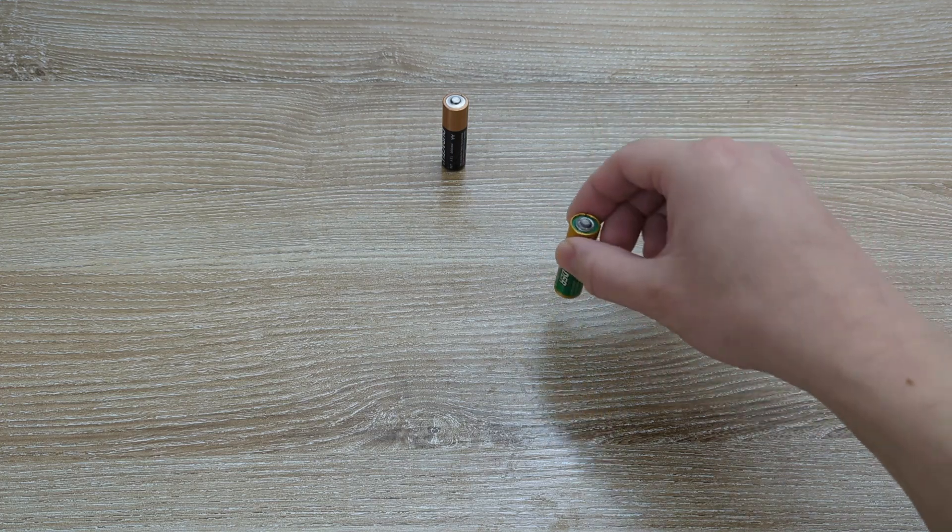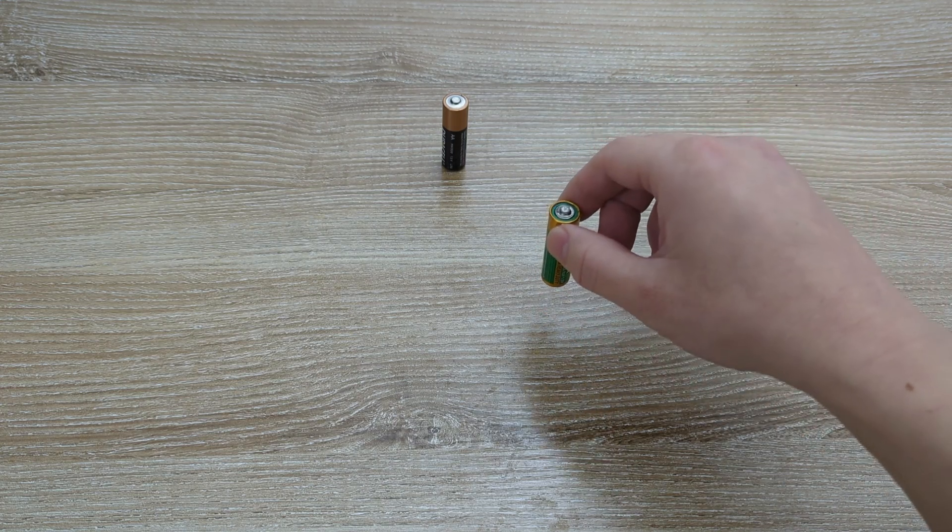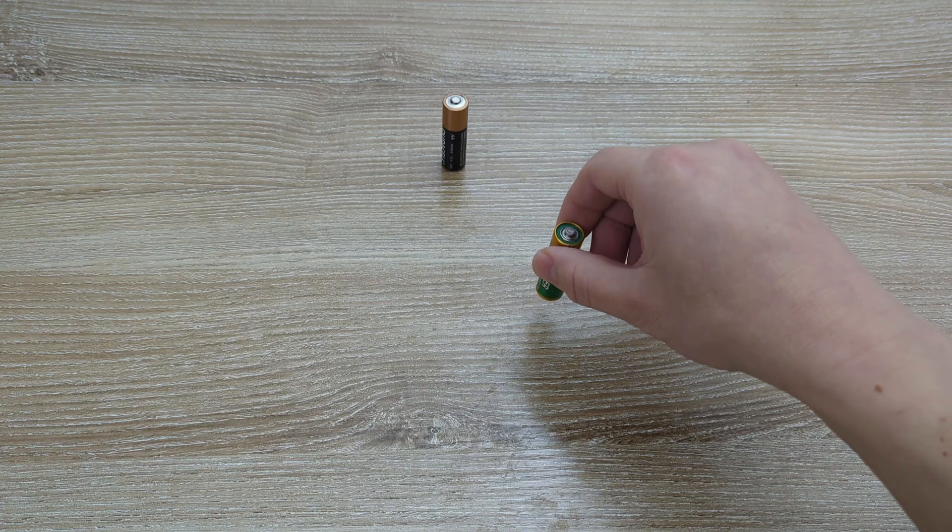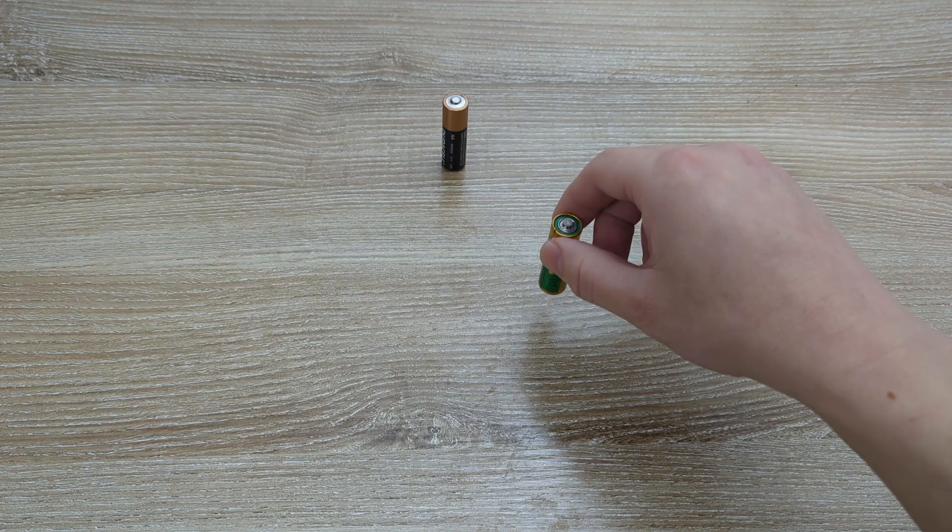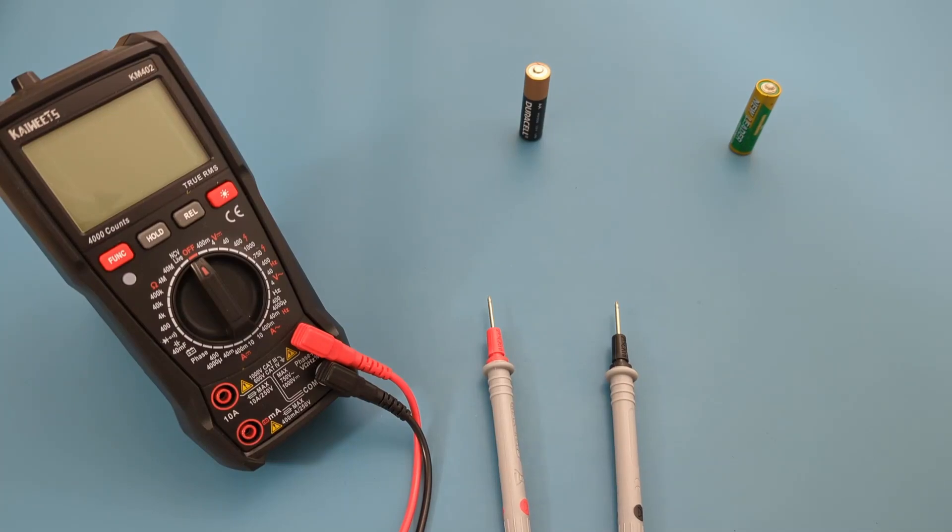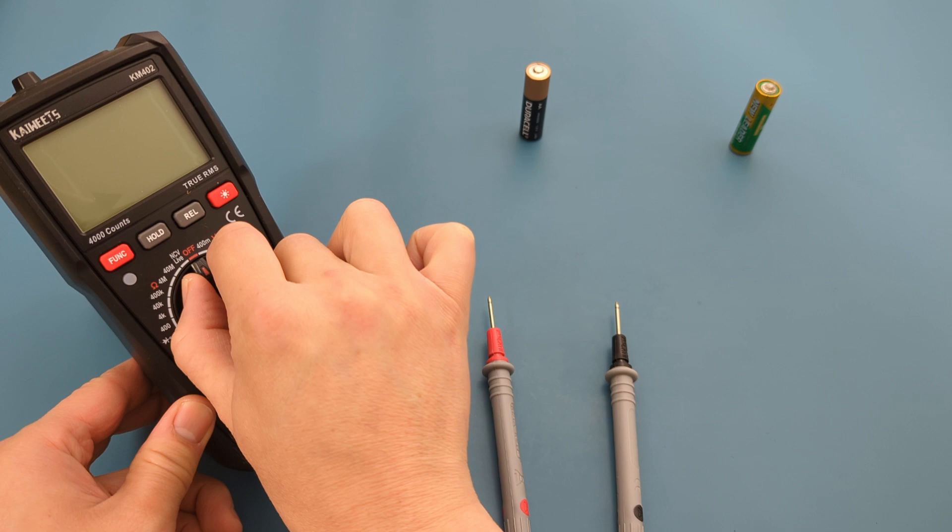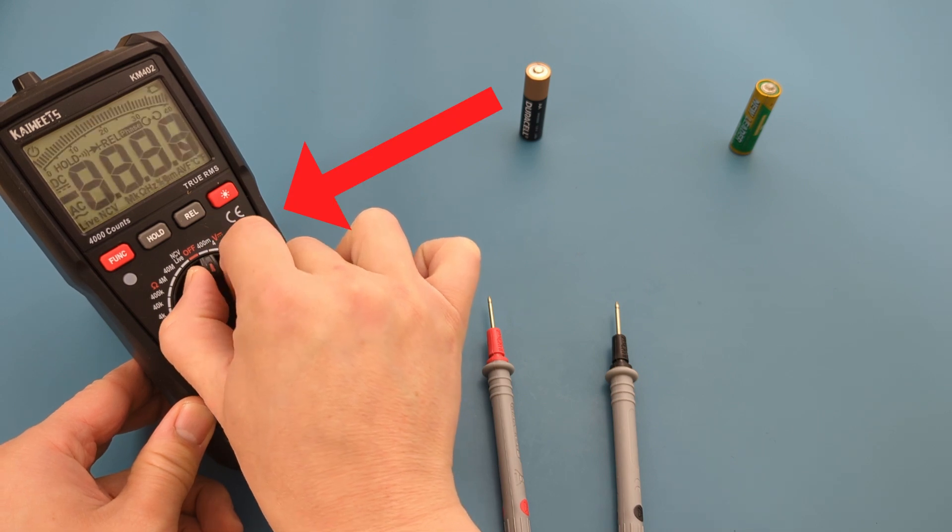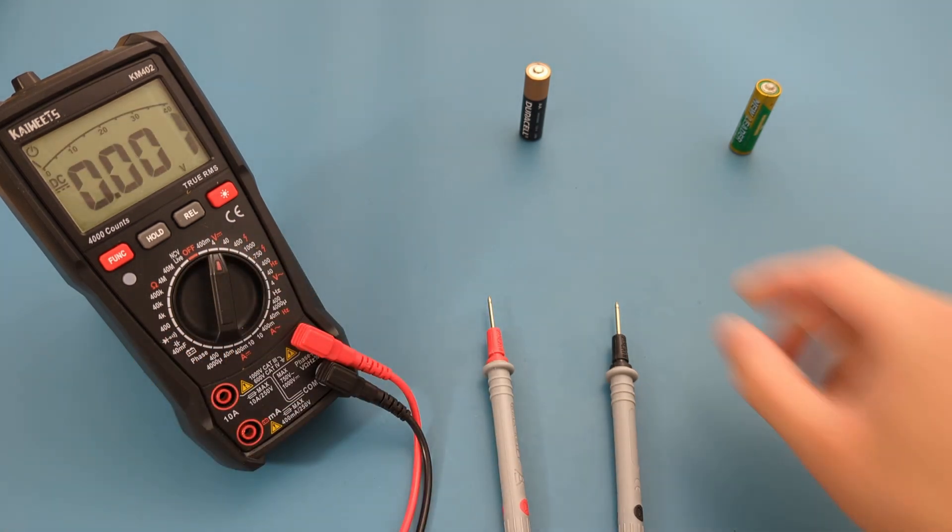To verify the results of the bounce test, we can use a multimeter to measure the battery's voltage. Set the dial on the multimeter to the voltage setting. For testing the 1.5-volt battery, adjust it to the 4-volt setting.